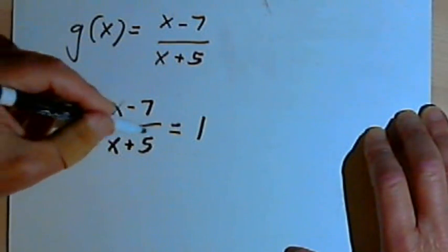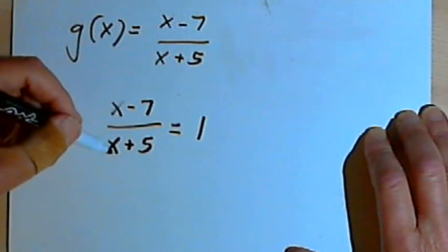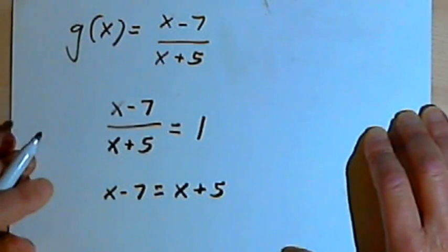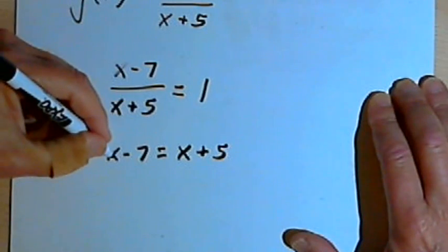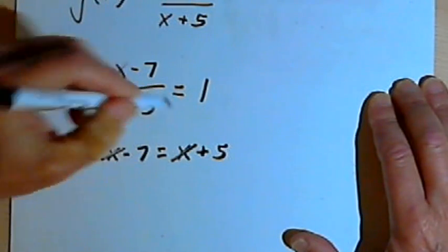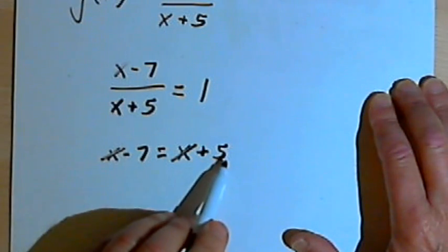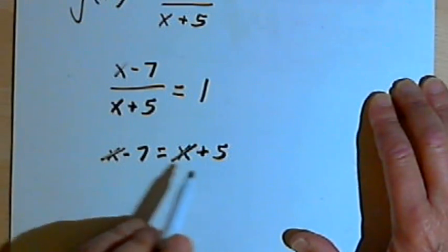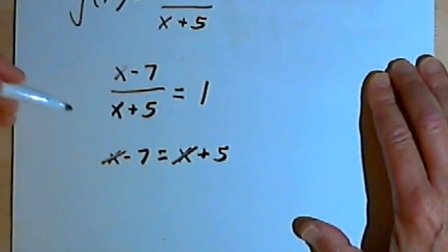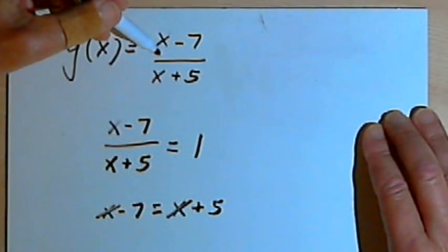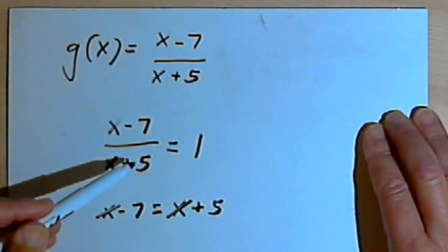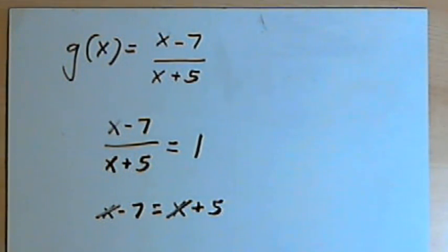So what I'm going to do is multiply both sides by x plus 5. When I do that, I'll get x minus 7 equals x plus 5. I can subtract x out of both sides, so I'll just cross the x's out. What I'm left with is negative 7 equals positive 5. Now that doesn't make sense, because this fraction is never going to equal 1. So in this case, the graph of the rational function is not going to intersect its horizontal asymptote — the rational function will never equal the horizontal asymptote. Let's take a look at one more.